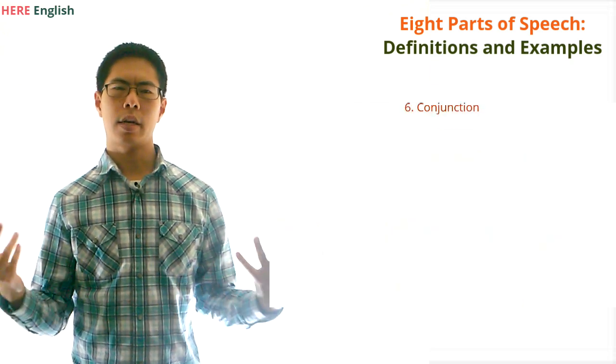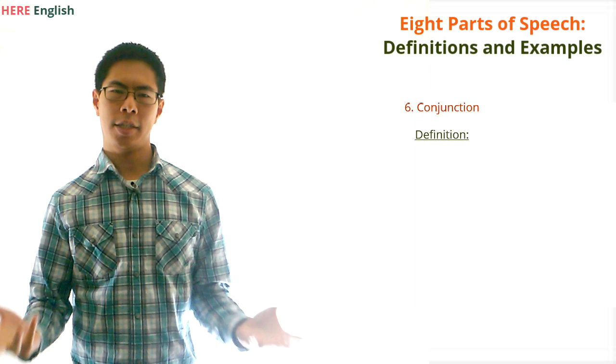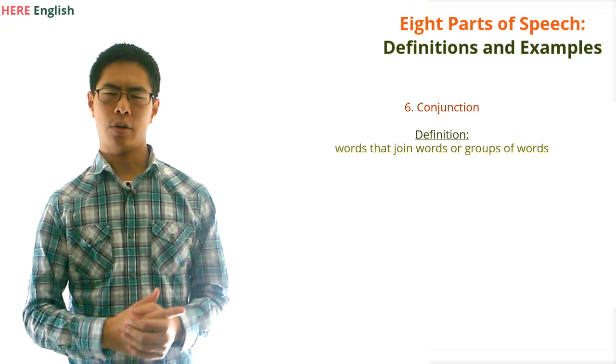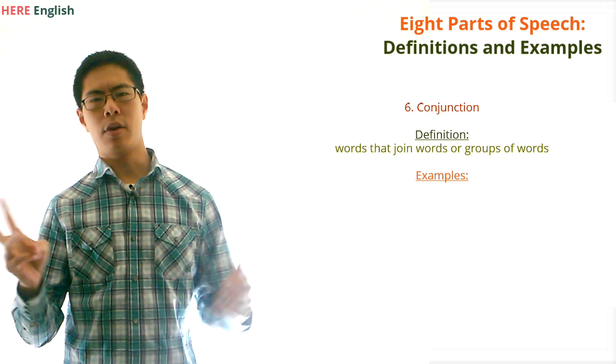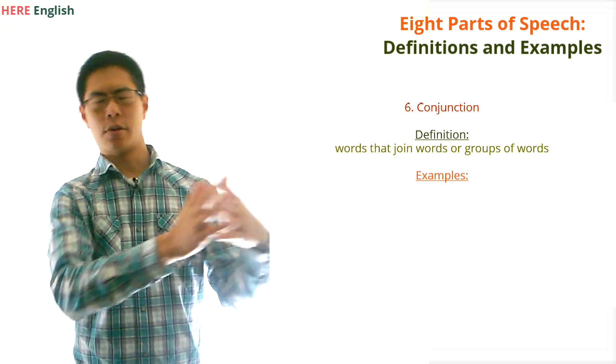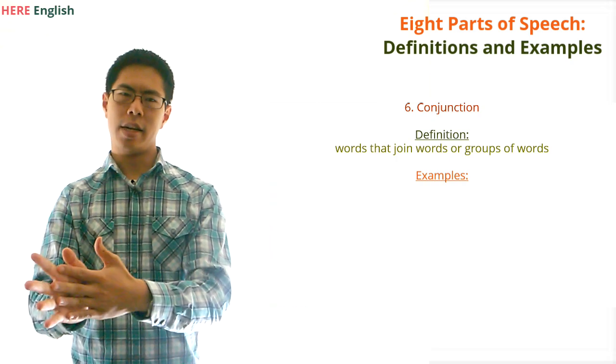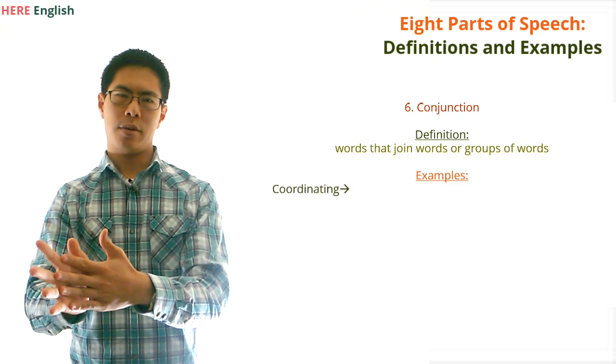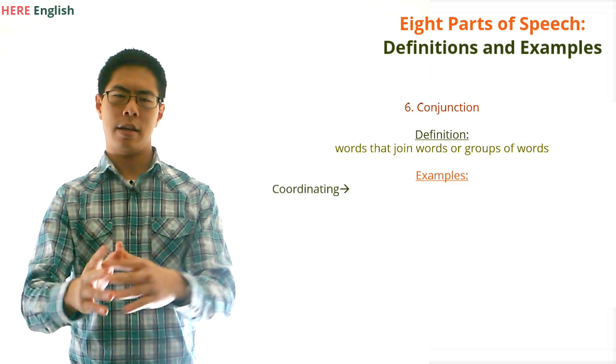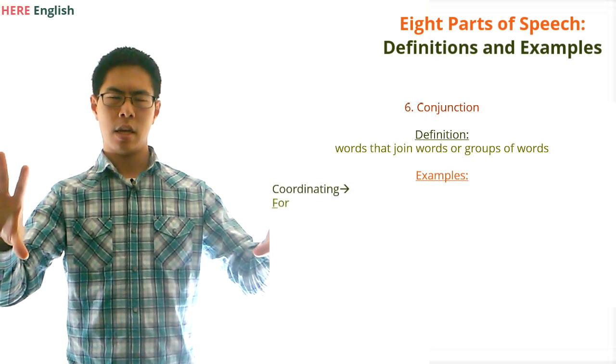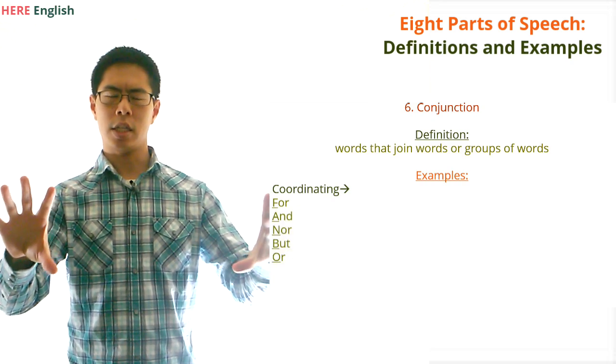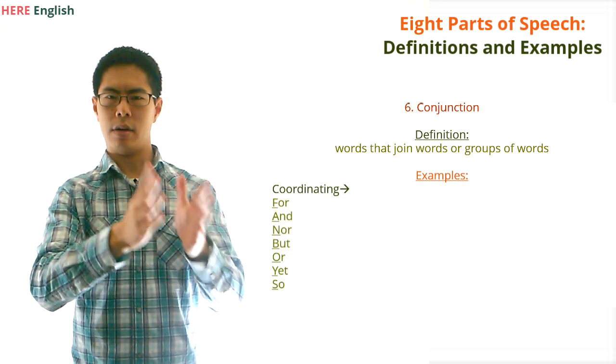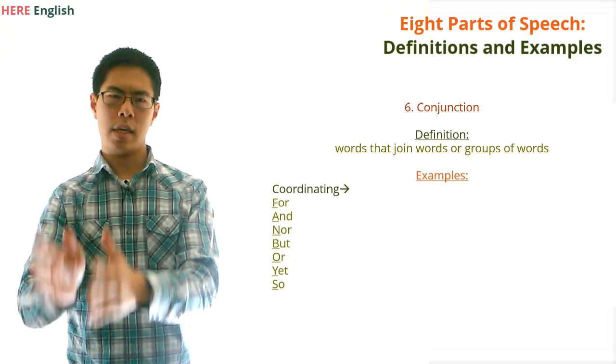Moving on, what about conjunctions? What are conjunctions? Conjunctions are words that join words or groups of words. There are three categories of conjunctions: coordinating conjunctions, correlative conjunctions, and subordinating conjunctions. Coordinating conjunctions can be thought of as the FANBOYS conjunctions, where each of the letters in FANBOYS stands for each of the coordinating conjunctions: for, and, nor, but, or, yet, so.